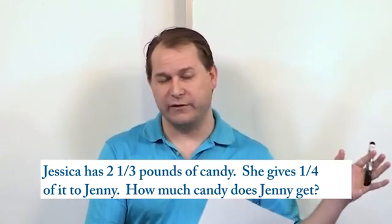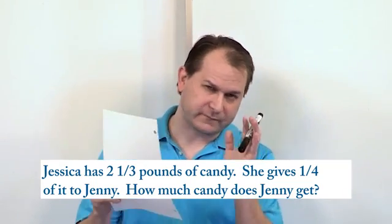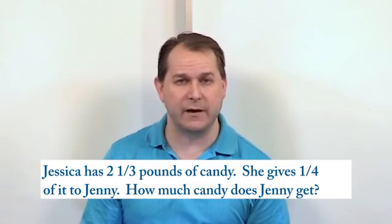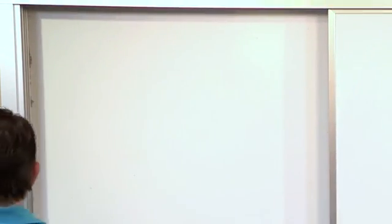We know that Jessica has two and a third pounds of candy and she gives away a certain amount of it to her friend, one quarter of that amount. So we need to multiply these fractions together. Effectively we're chopping down that two and a third pound bag and taking a quarter of it away.